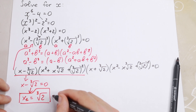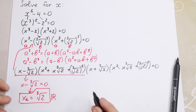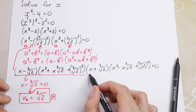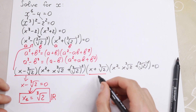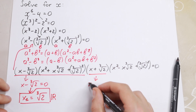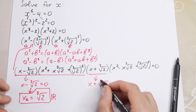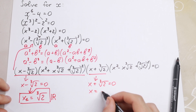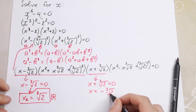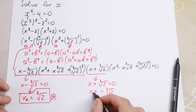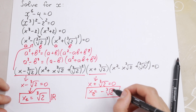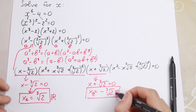This root is in real numbers. So let's solve the next case. We have x plus cube root of 2 equals 0, so x₂ equals minus cube root of 2. This is our second root, and it is also in real numbers.